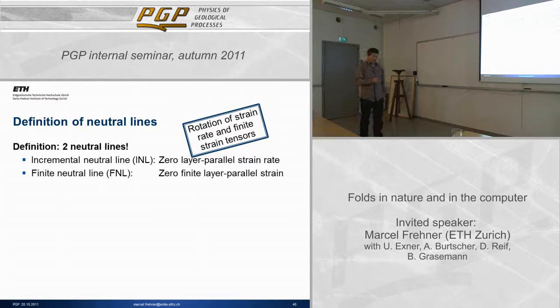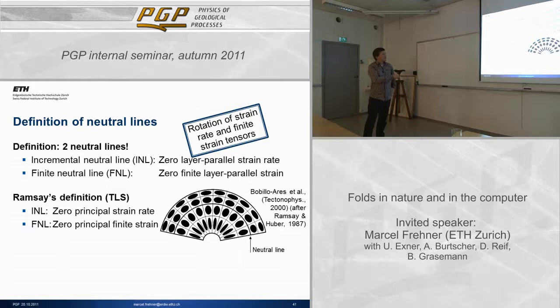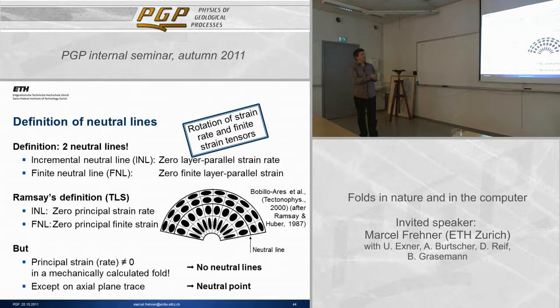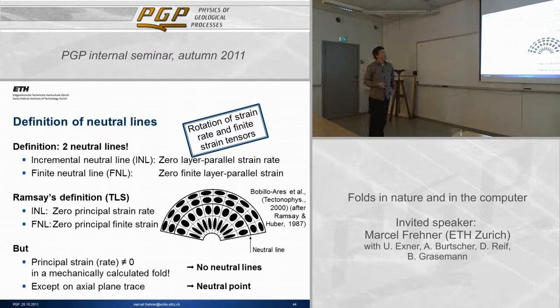When going back to Ramsay's original definition, the neutral line is defined as zero principal strain rate and zero principal finite strain — the long axis of the strain ellipse is zero on this neutral line. However, in a mechanically calculated fold, the principal strain and strain rate are never zero anywhere except exactly on the fold axial plane. So using Ramsay's definition, you end up with just a single neutral point on the axial plane, but no neutral line at all. Therefore we should use a different definition — otherwise we simply reject the neutral line concept entirely.